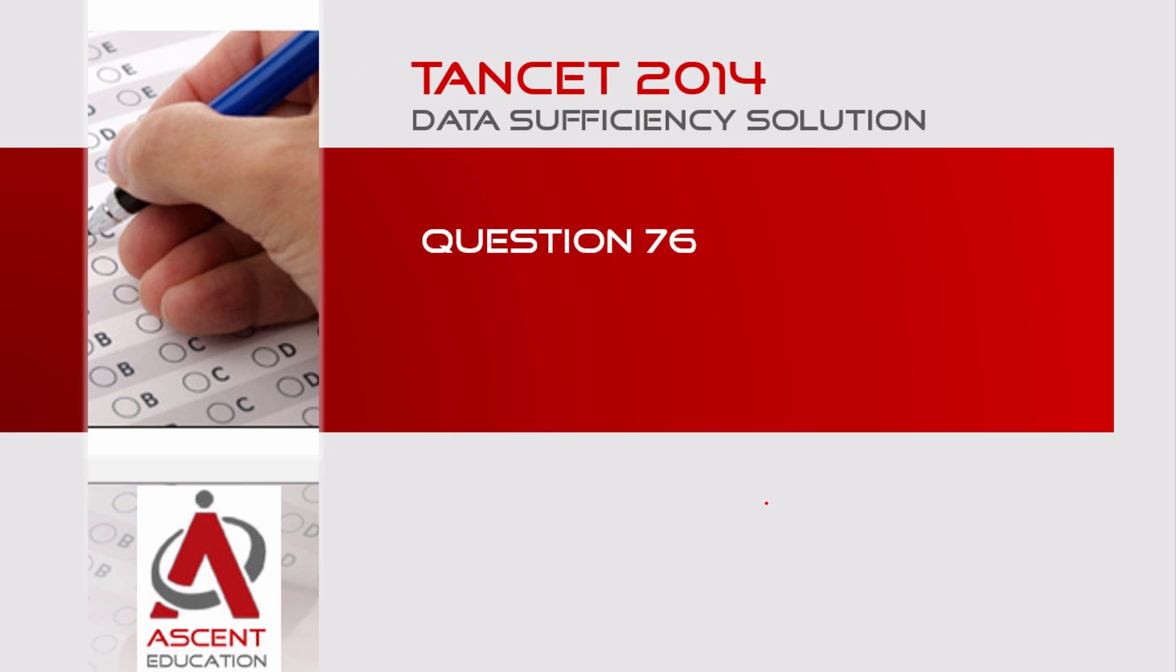This question appeared in Tanset 2014. It is data sufficiency, question 76. An easy question from the topic mensuration. Area of squares is the concept. Pretty straightforward. Area of square formula to solve.